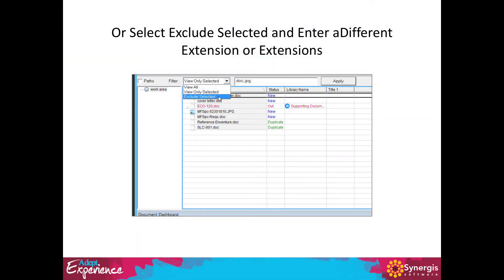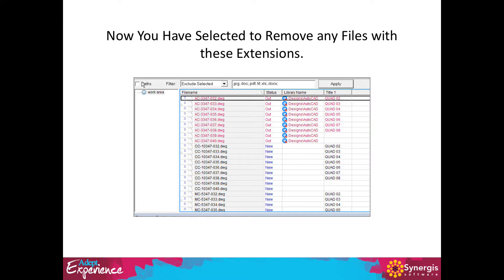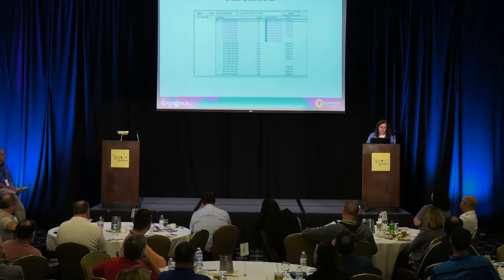The other option is 'Exclude Selected' — the opposite approach. Enter the extensions you want to hide, such as .jpeg, .doc, .pdf, .xls. Put them all in separated by semicolons and now you're left with just the file types you need to work on — for example, just your IAM, IPT, and IDW files for an assembly. This makes the work area more manageable when you have thousands of files.